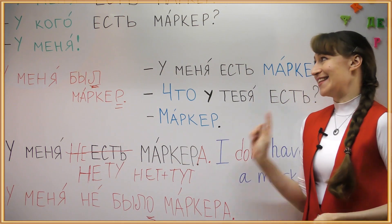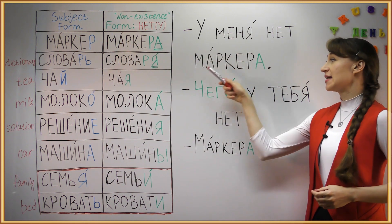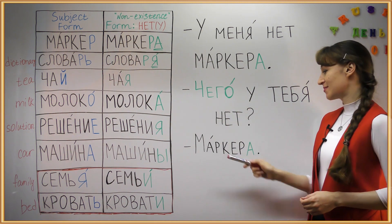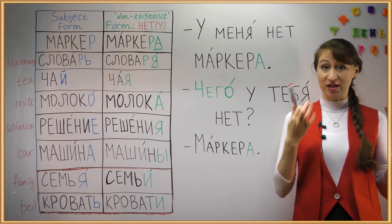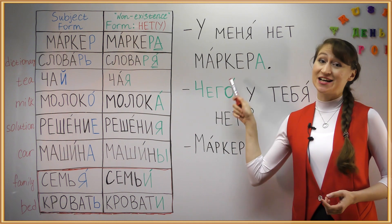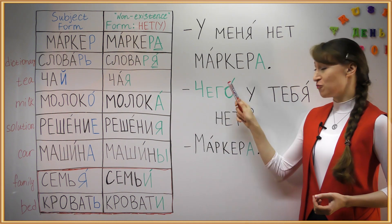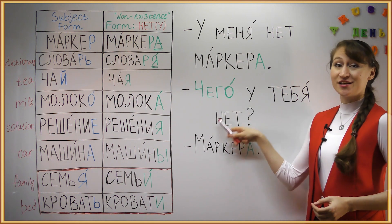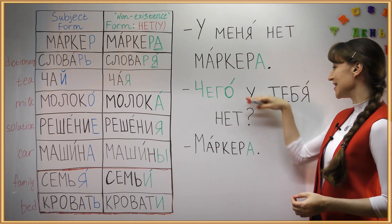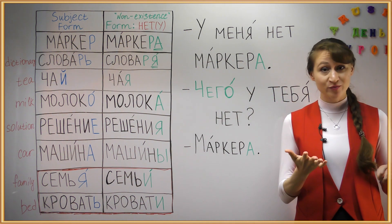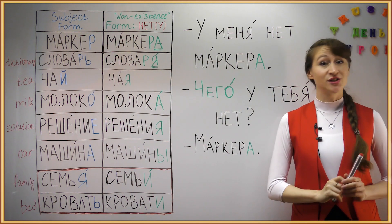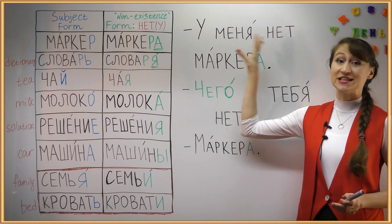Now let's move on to the question ЧЕГО. У МЕНЯ НЕТ МАРКЕРА. ЧЕГО У ТЕБЯ НЕТ? МАРКЕРА. So here, if we want to clarify what was said, we use the question word ЧЕГО. ЧЕГО fits the form МАРКЕРА like a key fits a lock — it asks: what is not there, what doesn't exist in your world? We cannot use ЧТО here, because ЧТО only corresponds to the subject form, and remember — there is no subject in this sentence at all.